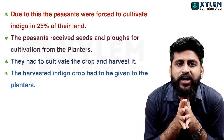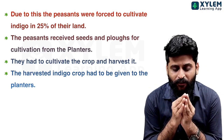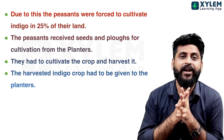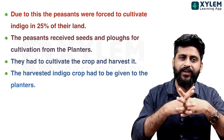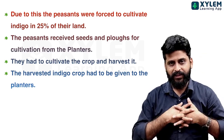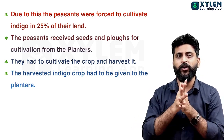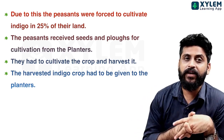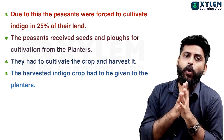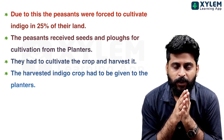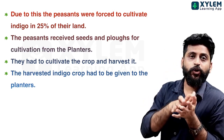Peasants were forced to cultivate Indigo in 25% of their land. If they had land, they were required to use 25% of it for Indigo cultivation. The peasants also received seeds and materials for cultivation from the planter.